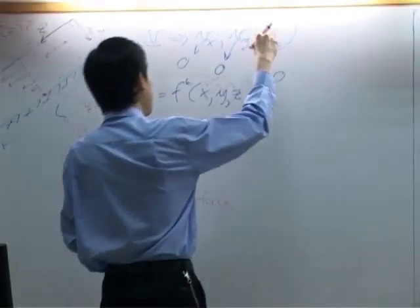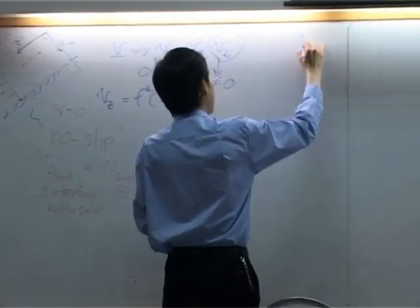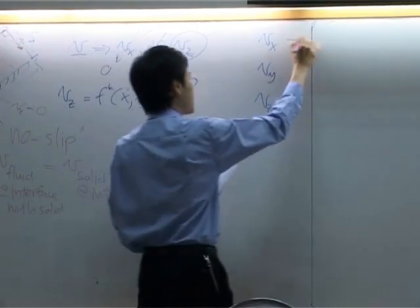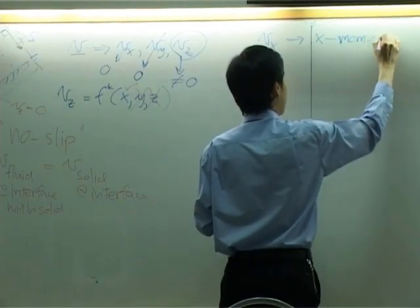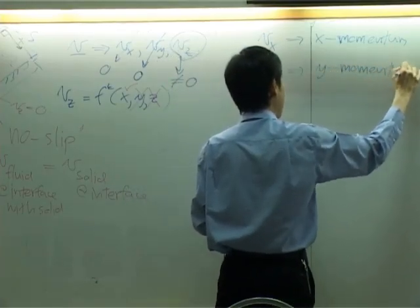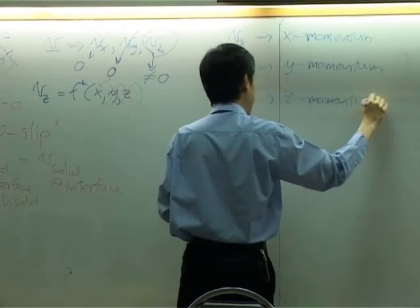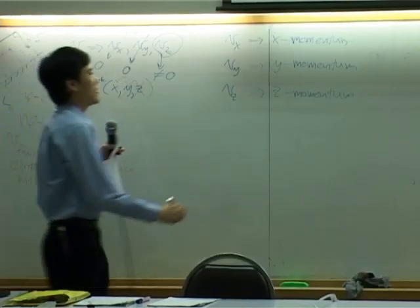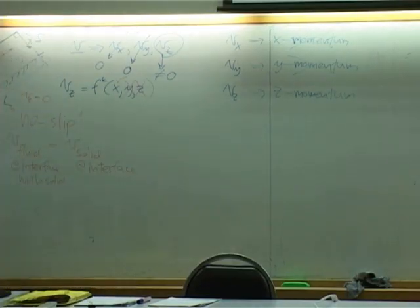If there is only a VZ component, normally we say that you have three components of velocity. VX resolves into X momentum, VY gives you Y momentum, and VZ gives you Z momentum. So if there is no VY and no VZ, there will be no X momentum and no Y momentum in this system — only Z momentum.